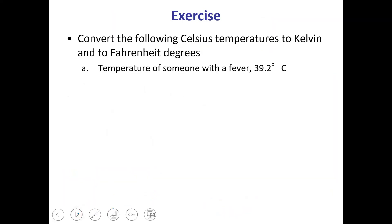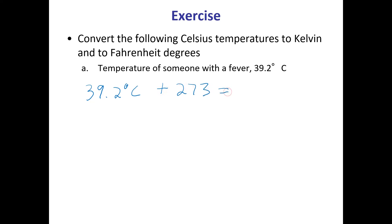Let's look at another example — we want to convert a temperature already given in Celsius to both Kelvin and Fahrenheit. Starting with 39.2 degrees Celsius, to convert to Kelvin we add 273: 39.2 plus 273 comes out to 312 Kelvin, rounded to the correct number of significant figures.